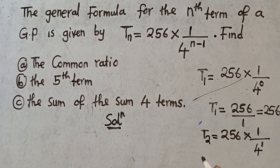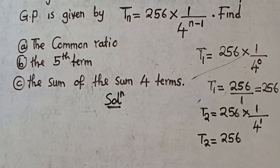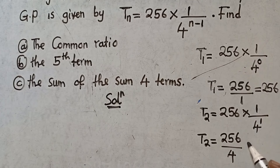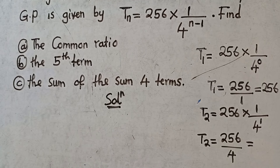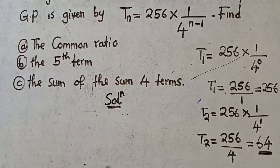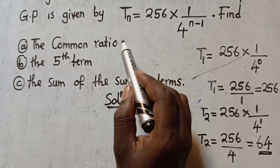So the second term is 256 over four to the power one, which is just 4. So I have 256 divided by 4. What is the answer? I get 64. So the second term is 64.